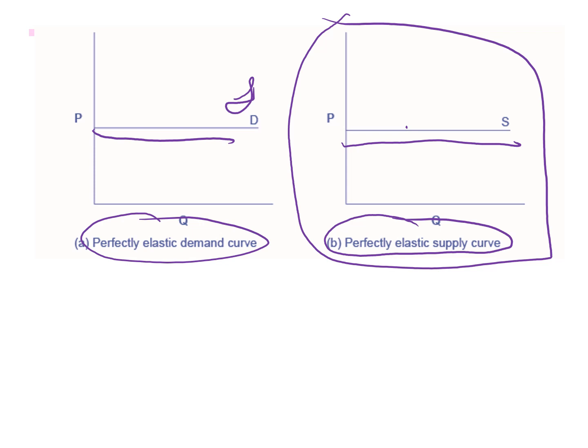The horizontal line shows that an infinite quantity will be supplied at a specific price. This illustrates the case of a perfectly elastic supply curve, which means that the quantity supplied is extremely responsive to a price change — moving from zero for prices close to P, to infinite when prices reach P. A perfectly elastic supply is considered to be unrealistic.